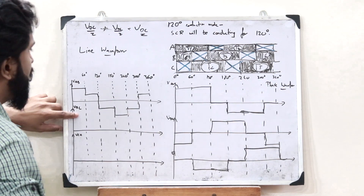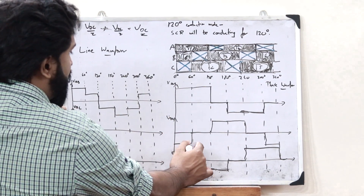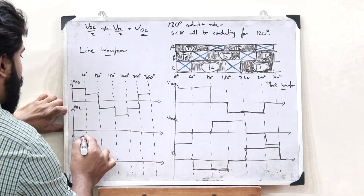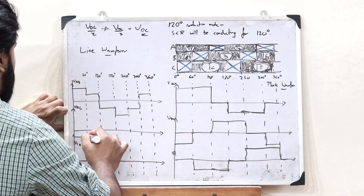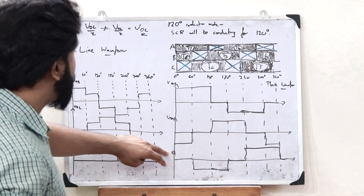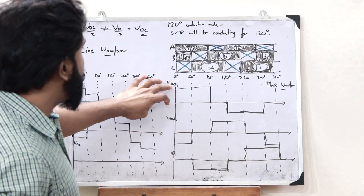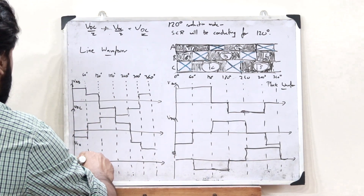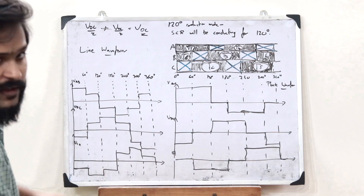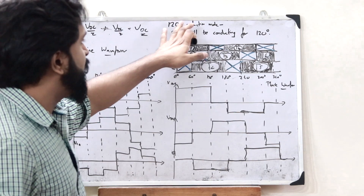For VBC = VB − VC: from 0 to 60 degrees, (−VDC/2) − 0 = −VDC/2. We can continue the pattern from there. For VCA = VC − VA: from 0 to 60 degrees, 0 − (VDC/2) = −VDC/2, completing the remaining pattern similarly. This is the line waveform for a three-phase inverter with 120 degree conduction mode.